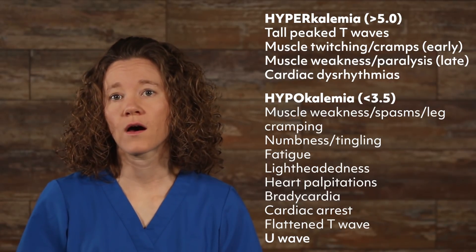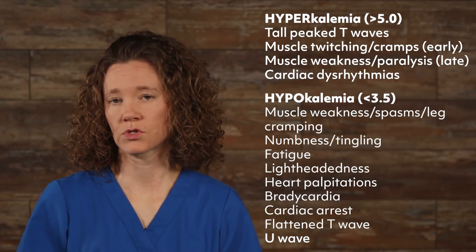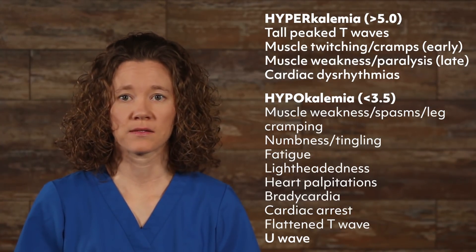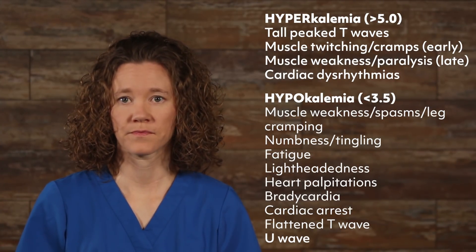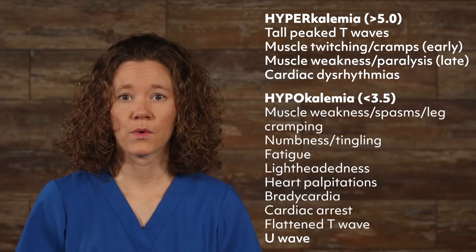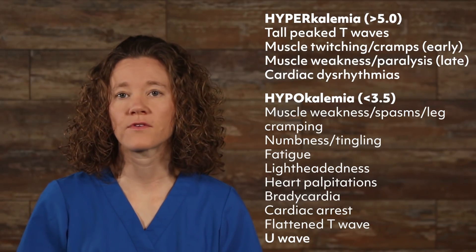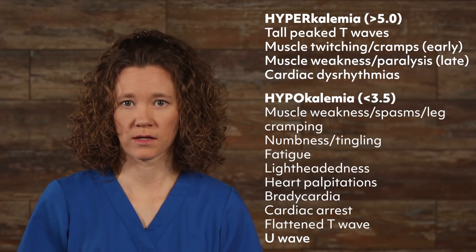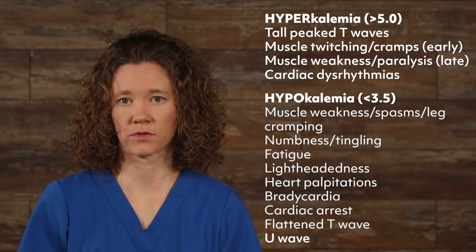Treatment of the underlying cause and supplemental potassium is usually given. Potassium is found in foods such as bananas, melons, or raw spinach. Oral potassium supplements, IV fluids with potassium, and switching to potassium-sparing diuretics will help increase potassium levels. Be sure IV potassium is diluted and administered with an IV pump, because potassium can burn the vein, and an overdose can cause cardiac arrhythmias and death.